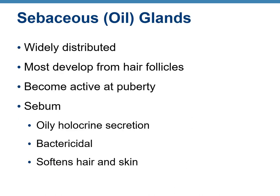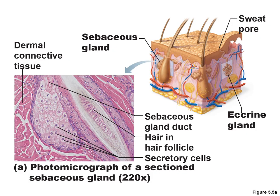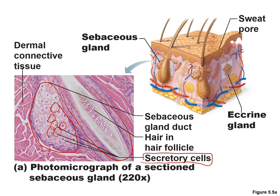Oil glands — also called sebaceous glands — are widely distributed, develop from hair follicles, and become active at puberty. They secrete sebum, which is an oily holocrine secretion that protects against bacteria and keeps skin and hair soft. This photomicrograph shows a sebaceous gland next to a hair follicle. Do not confuse these secretory epithelial cells with adipose tissue — they may look similar but are completely different tissue types.